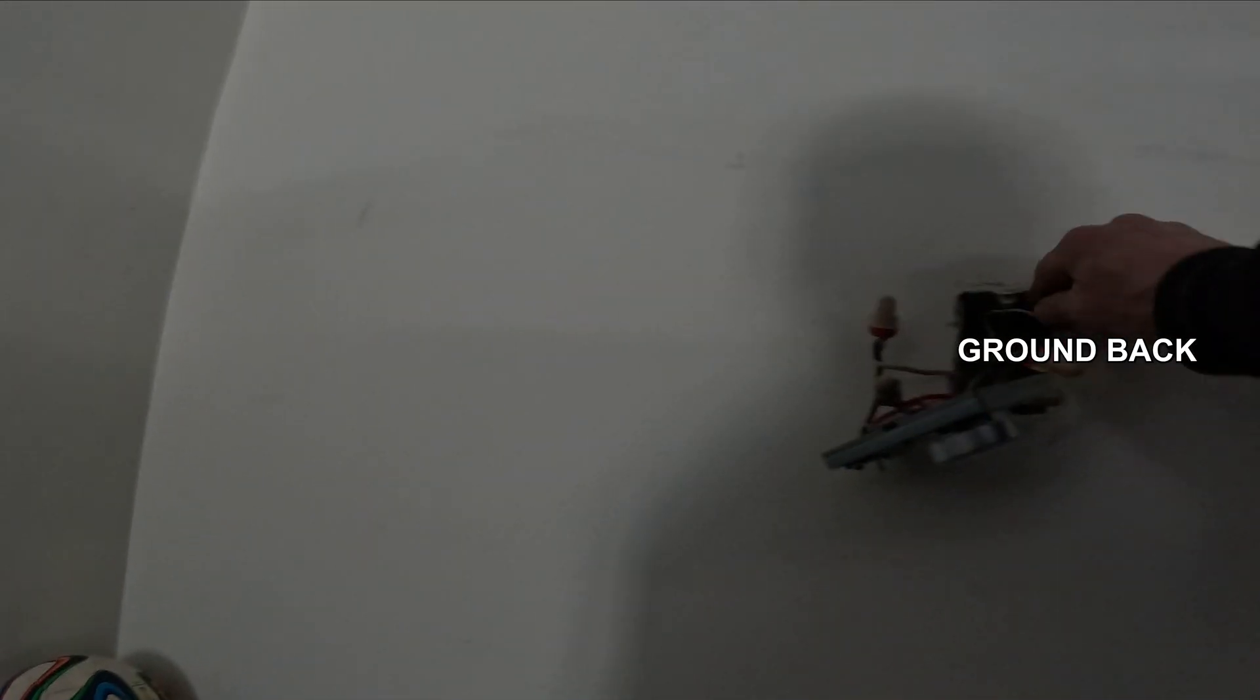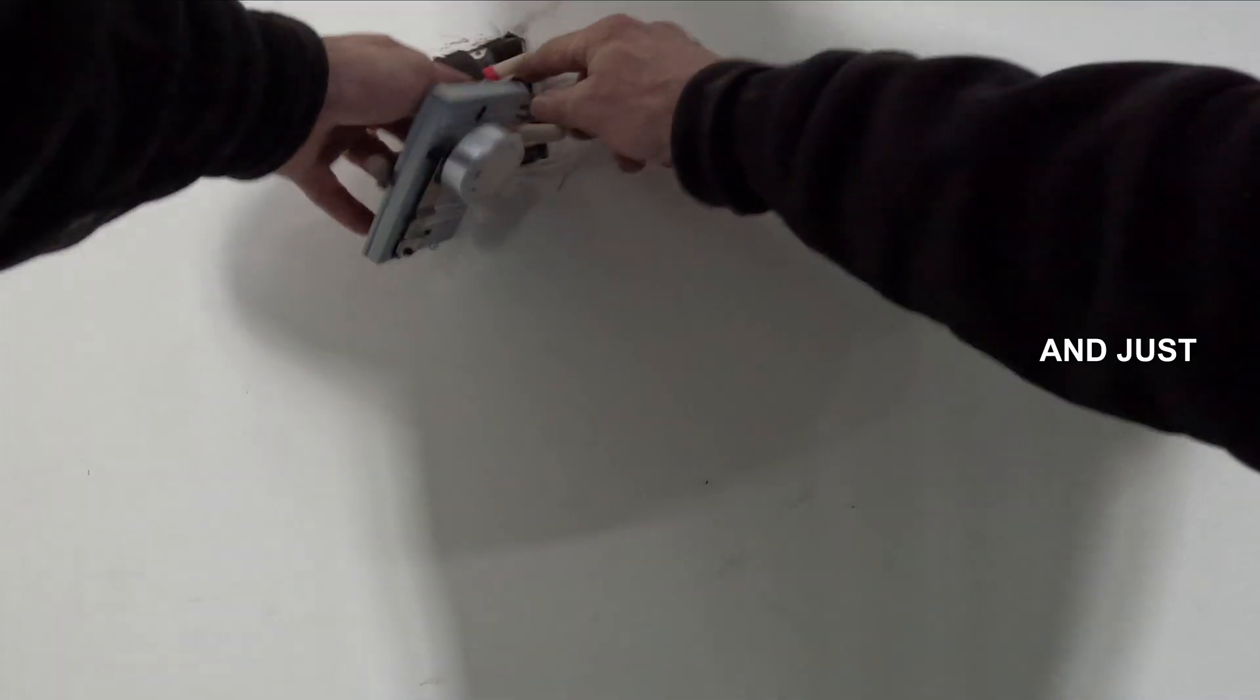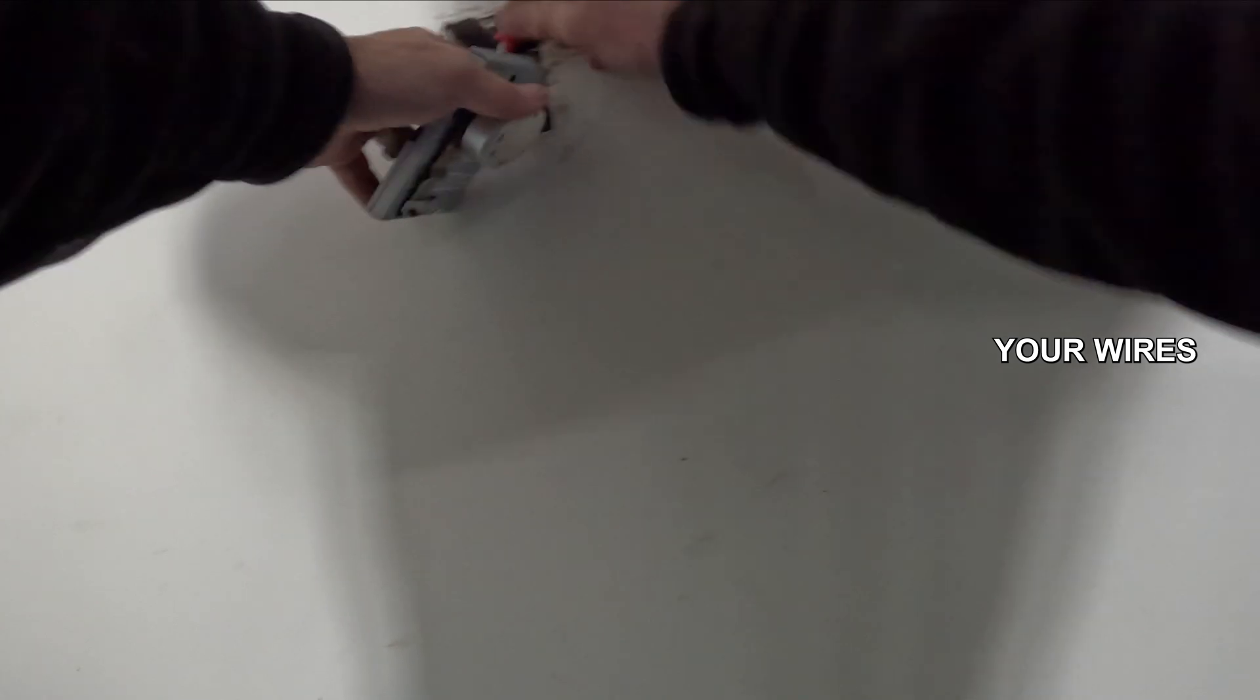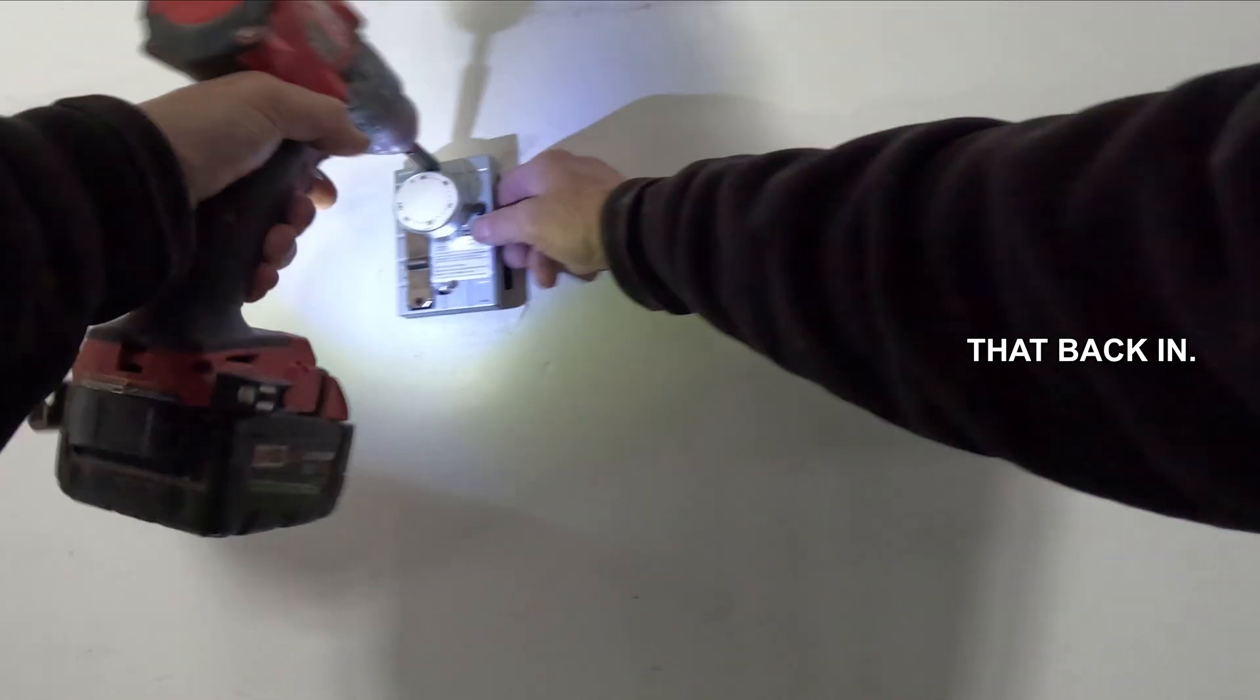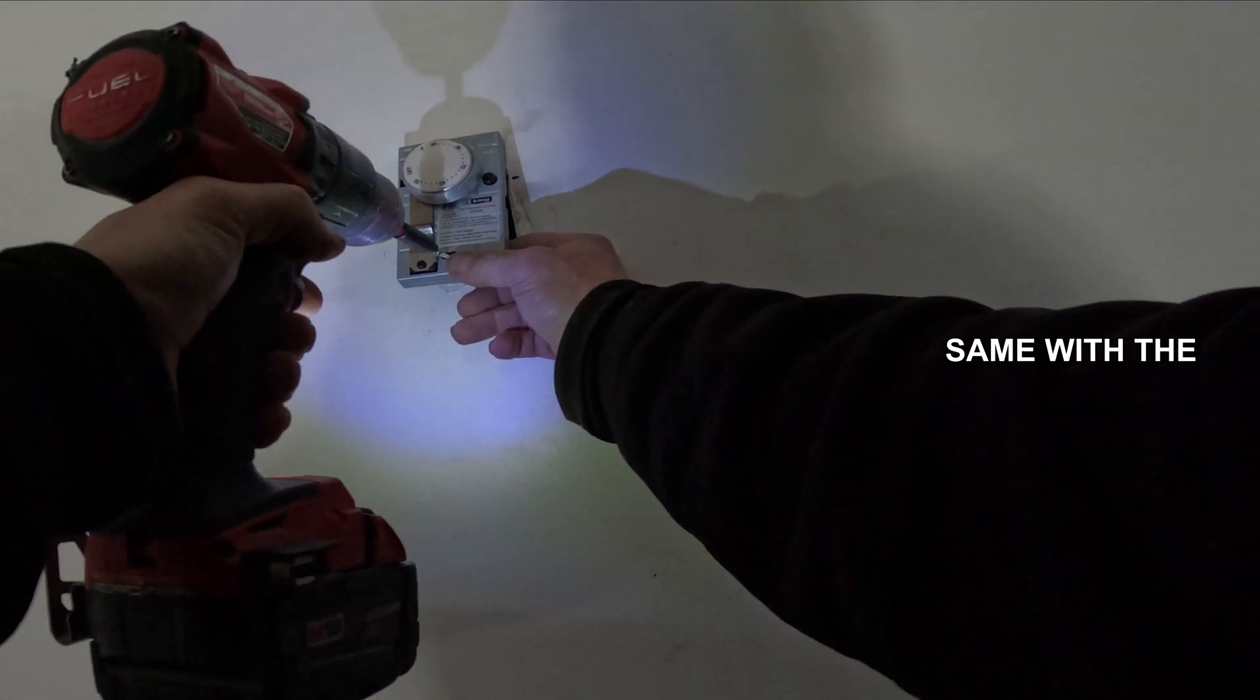So I'm just going to tuck this ground back out of the way enough that it is not going to be a challenge. You can see all the smoke, all the fire from the previous thermostat. Then just carefully tuck your wires back in there, grab the screw, and I'm going to screw that back in. Same with the bottom one.